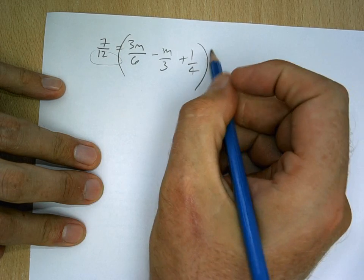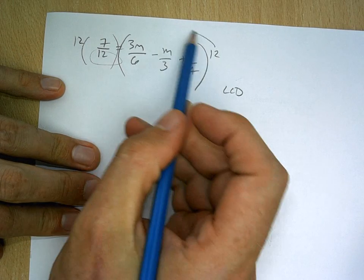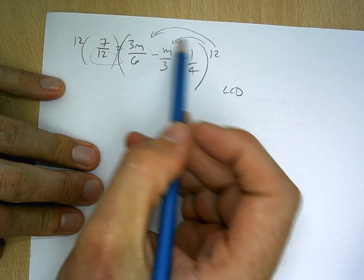So what I'm going to do is I'm going to multiply this entire side by 12 and this entire side by 12 here. And with the distributive property, I'm going to multiply this in here and here and here.